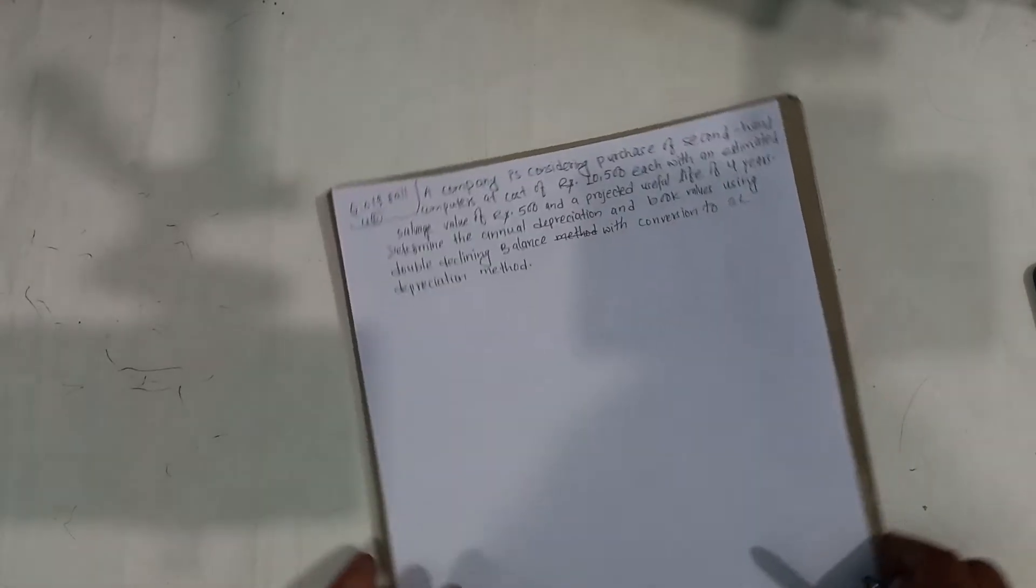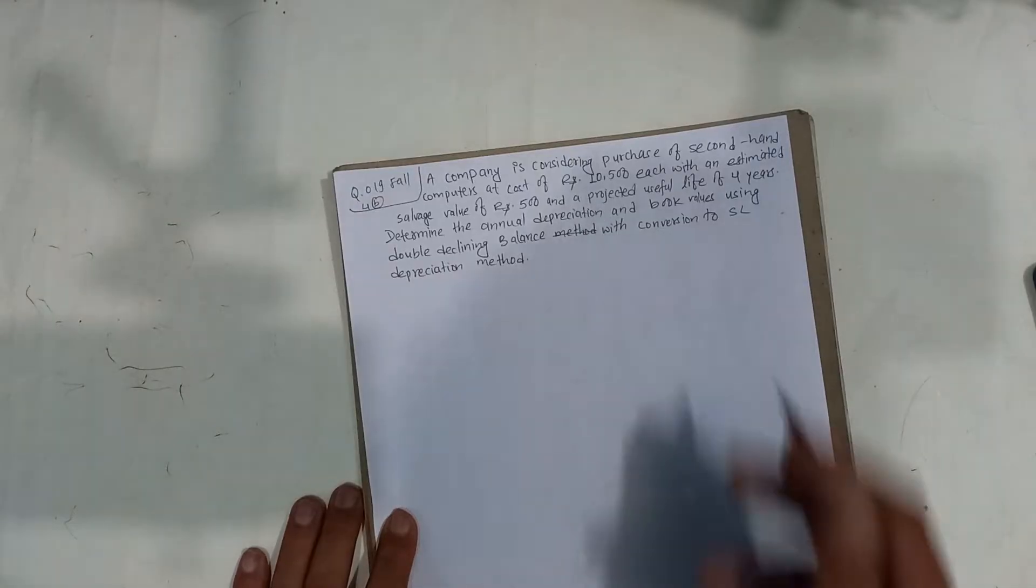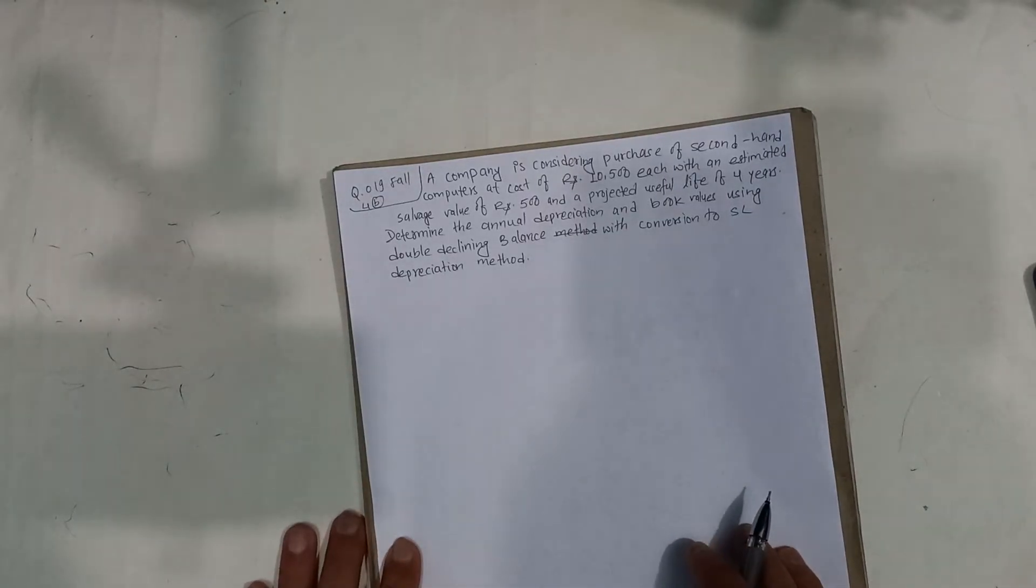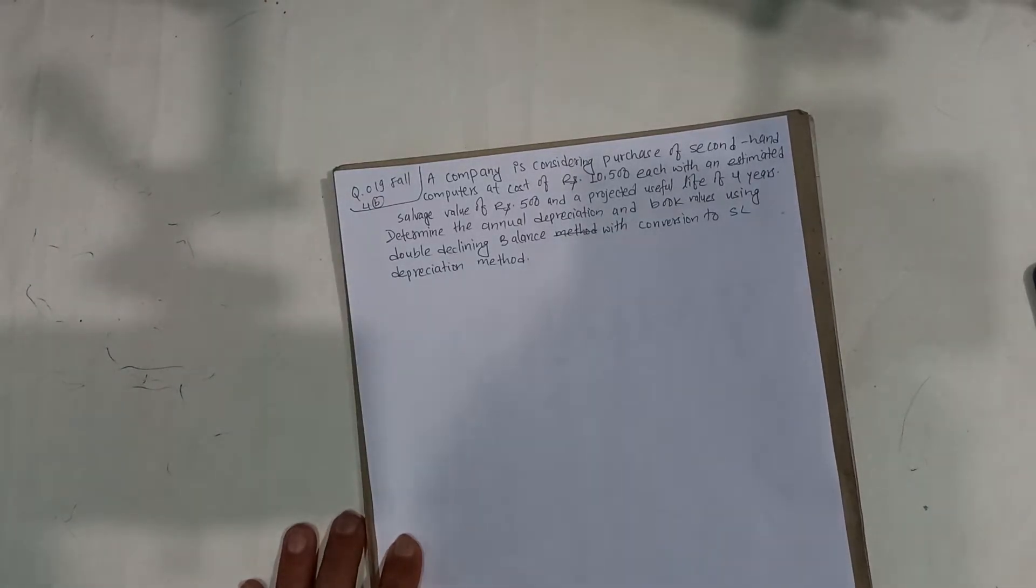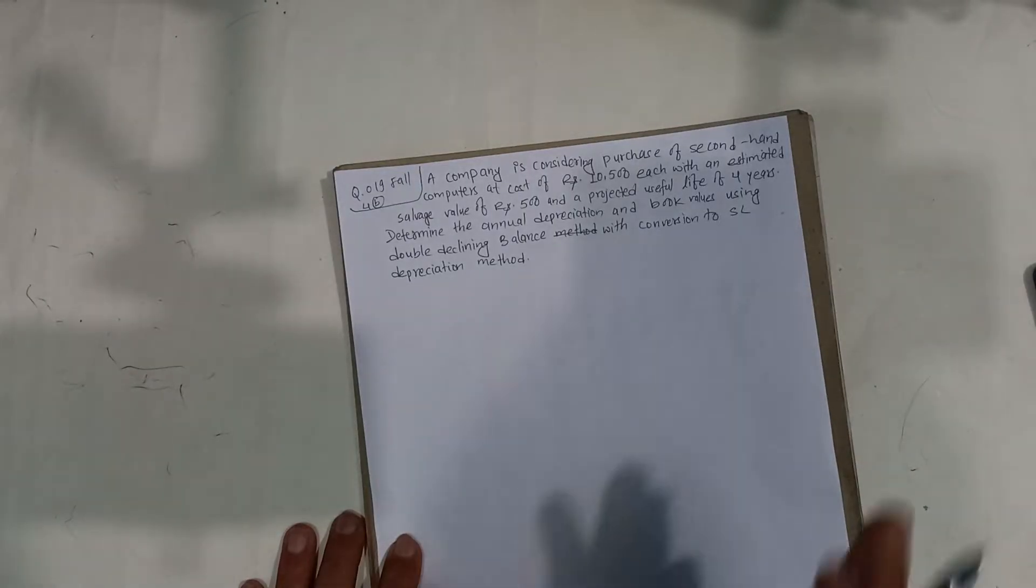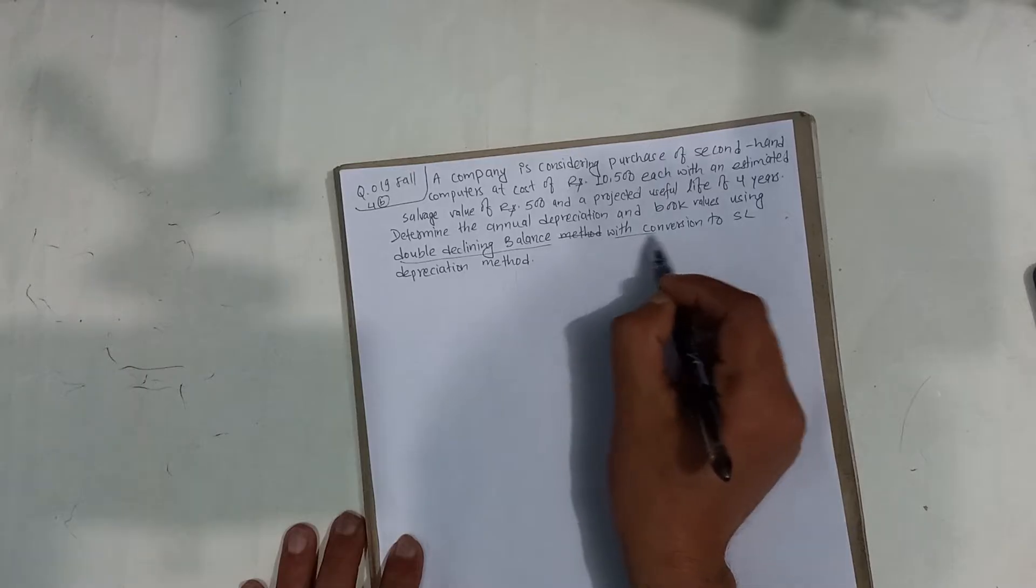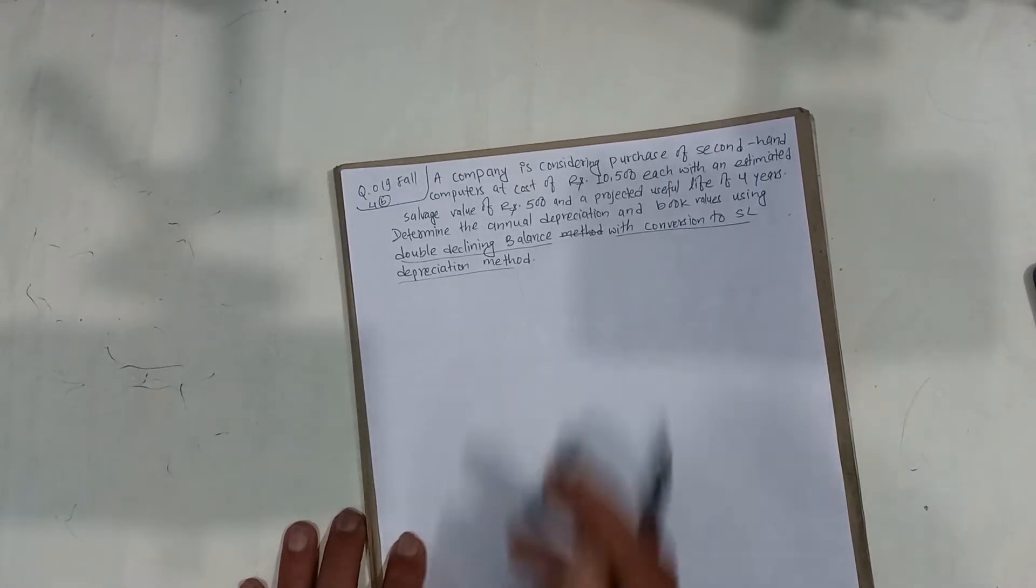Welcome back. A company is considering purchase of second-hand computers at cost of Rs 10,500 each with an estimated salvage value of Rs 500 and a projected useful life of 4 years. Determine the annual depreciation and book value using double declining balance method with conversion to SL depreciation method.